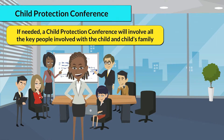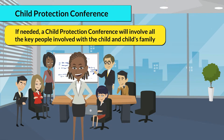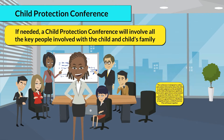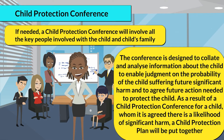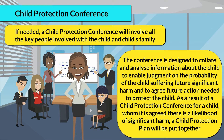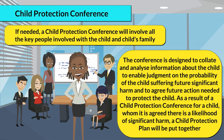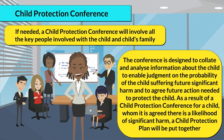If needed, a child protection conference will involve all the key people involved with the child and child's family. The conference is designed to collate and analyse information about the child to enable judgment on the probability of the child suffering future significant harm and to agree future action needed to protect the child. As a result of a child protection conference, for a child whom it has been agreed there is a likelihood of significant harm, a child protection plan will be put together.